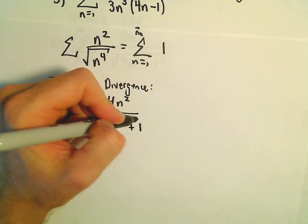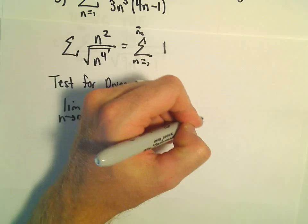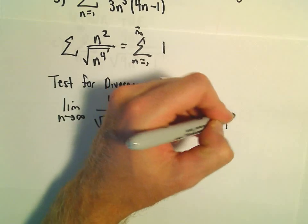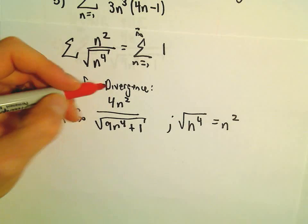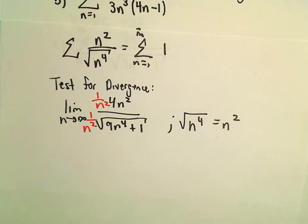Again, what we can do is divide by the highest power of n in the denominator. So I see an n to the 4th in the denominator, but again, if we square root that, we get n squared. So if you multiply the numerator by 1 over n squared and the denominator by 1 over n squared.